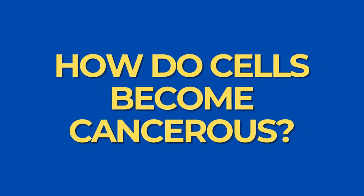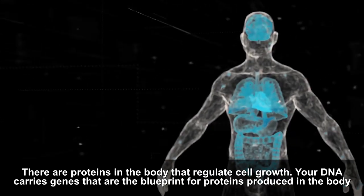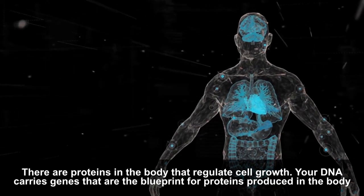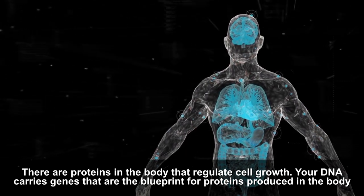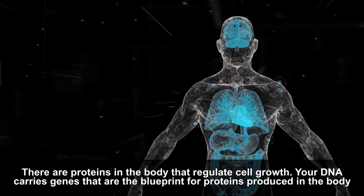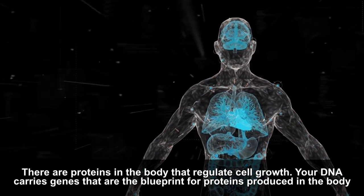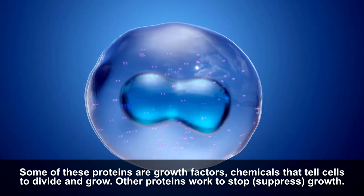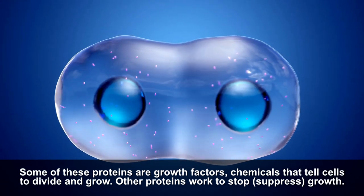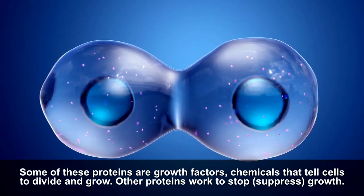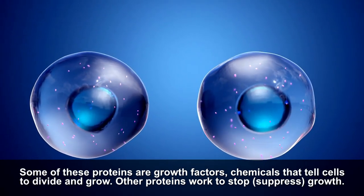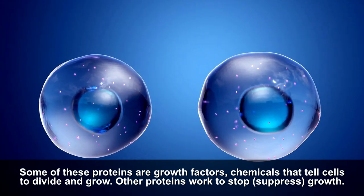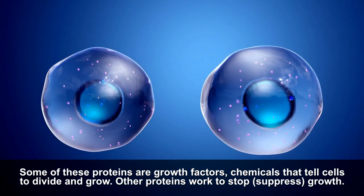How do cells become cancerous? There are proteins in the body that regulate cell growth. Your DNA carries genes that are the blueprint for proteins produced in the body. Some of these proteins are growth factors — chemicals that tell cells to divide and grow. Other proteins work to stop, or suppress, growth.